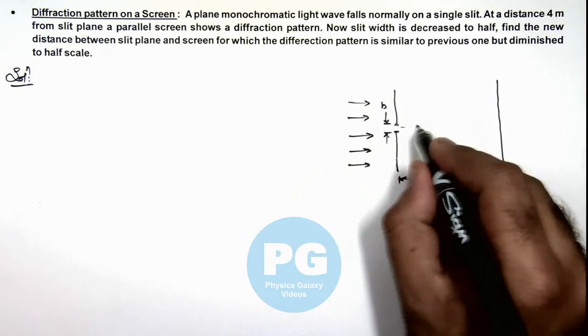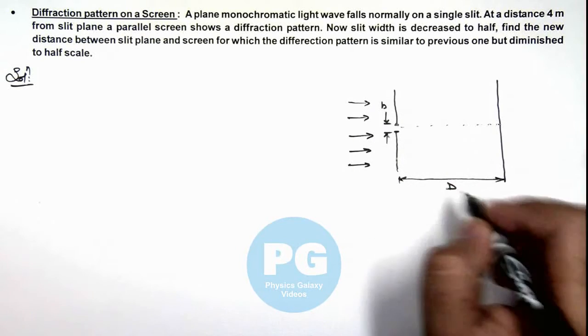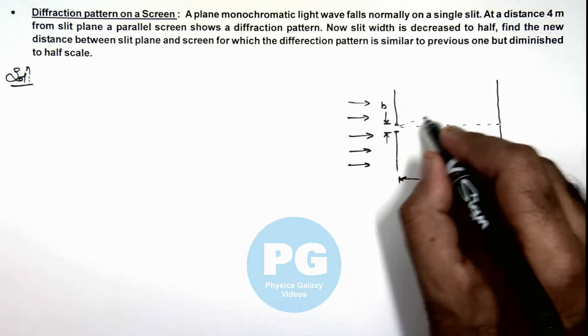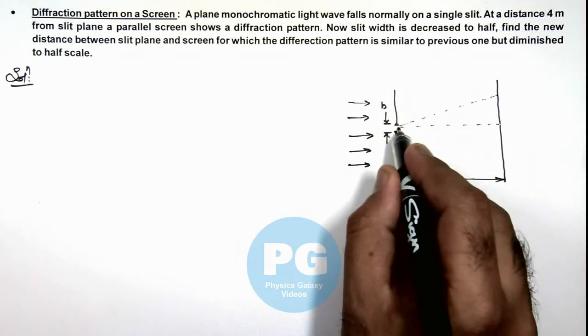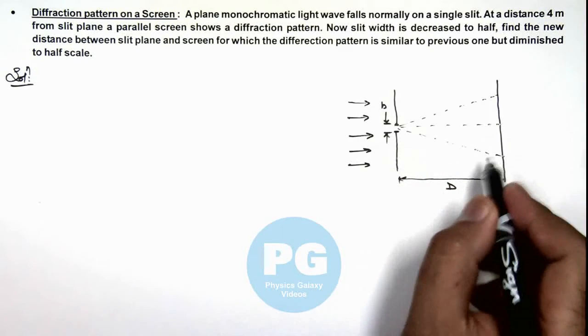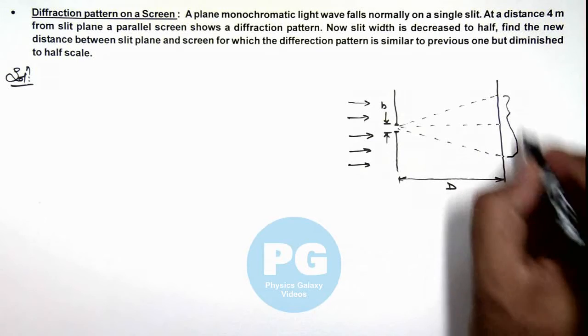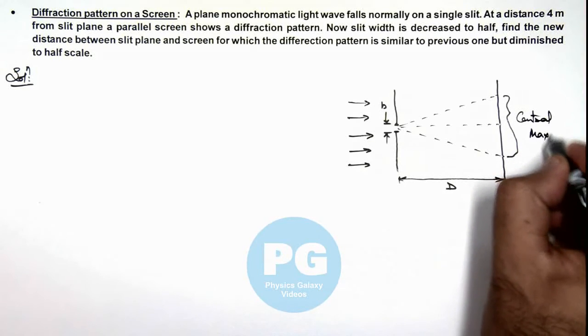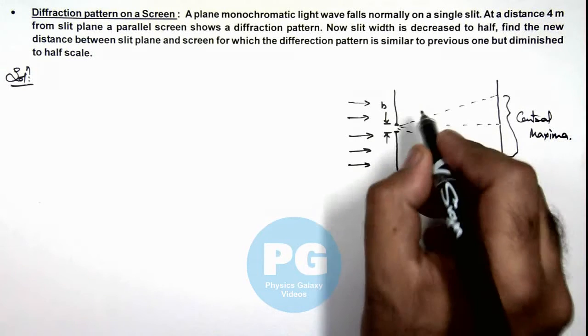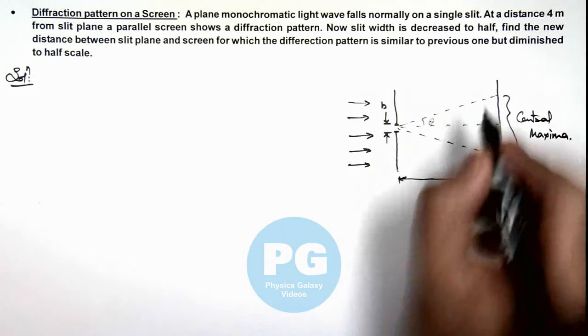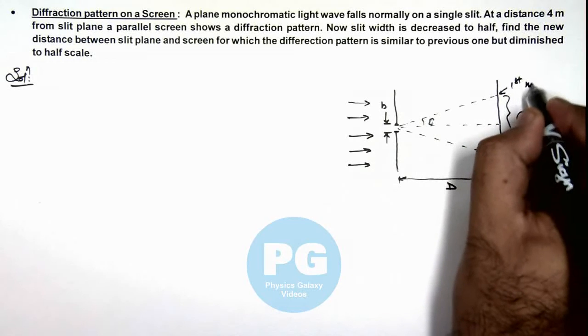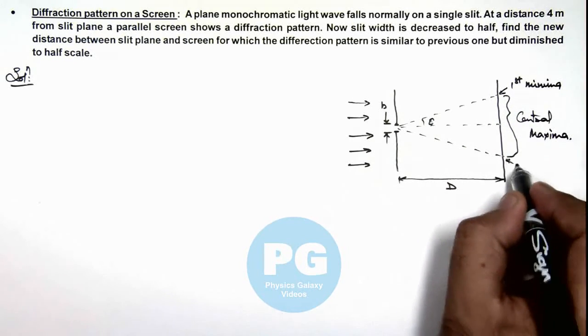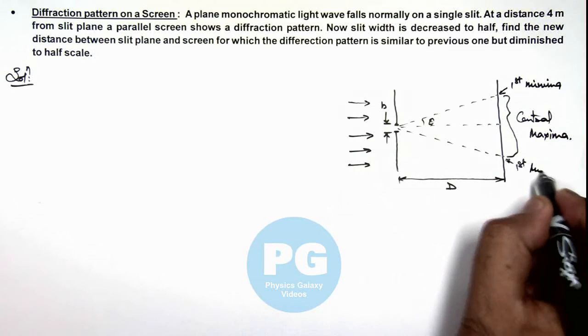Now in this situation, if this is the central maxima, then we know well the angular width of central maxima is extended to the points where first minima is obtained. So this is the central maxima we consider, and in this situation if this half angle is theta, so this will be the point of first minima on both sides. This is the first minima on the lower half of screen.